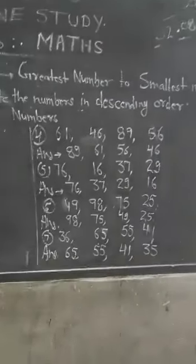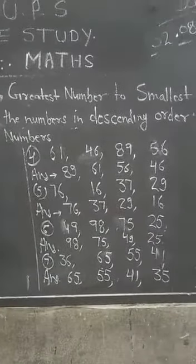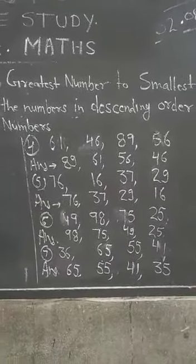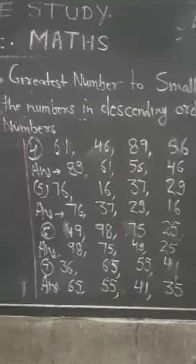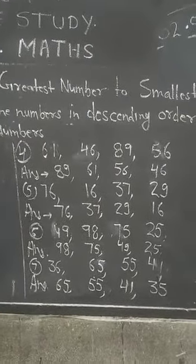Question number 4 में देखें: 61, 46, 89, 56. So, सबसे बड़ा number जो है वो है 89, greatest number, फिर उसके बाद में 61,